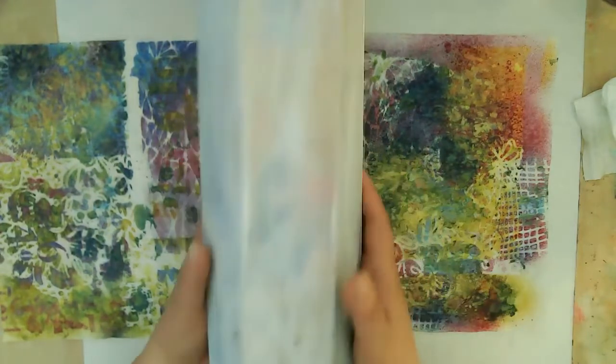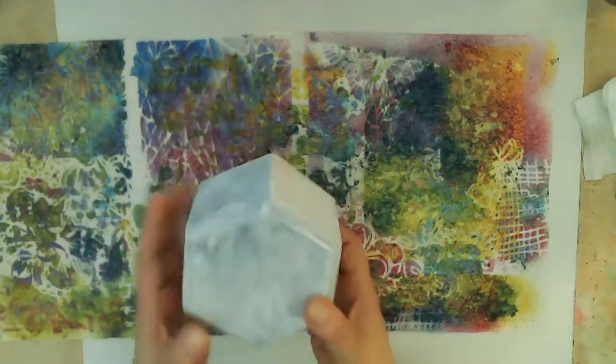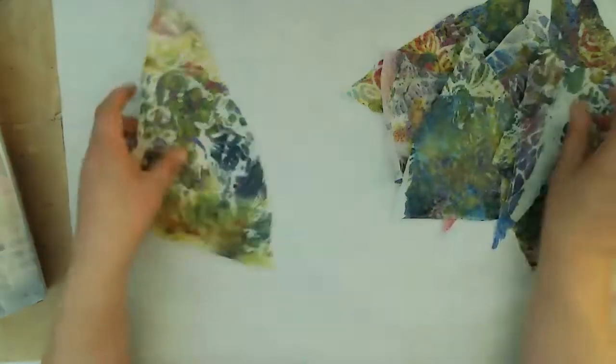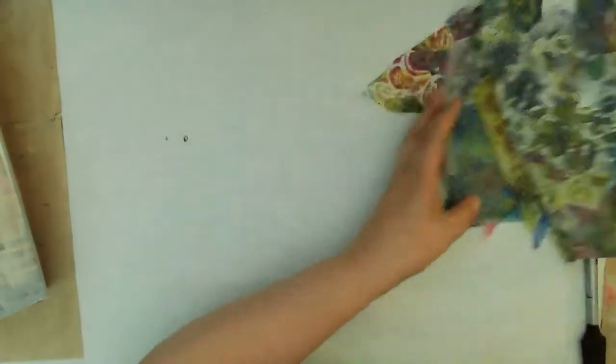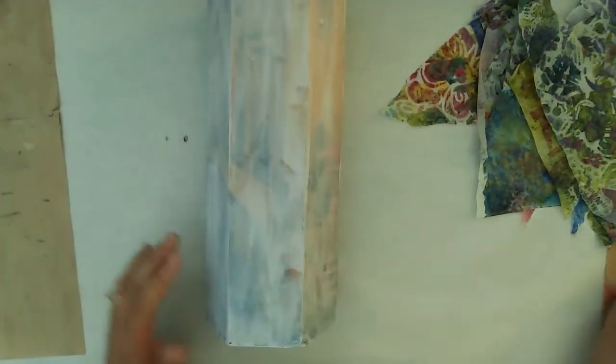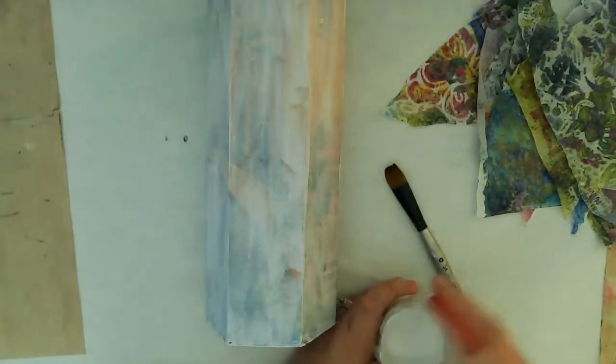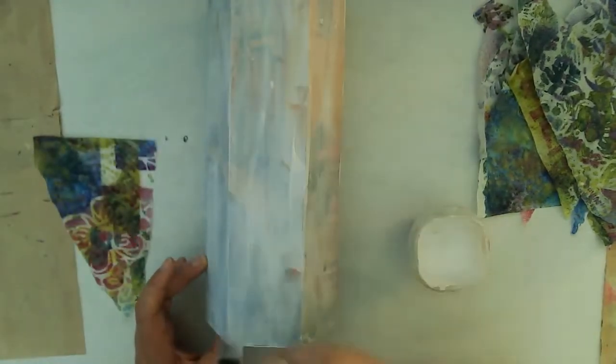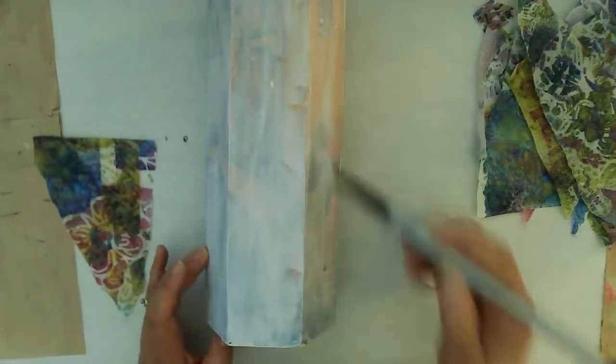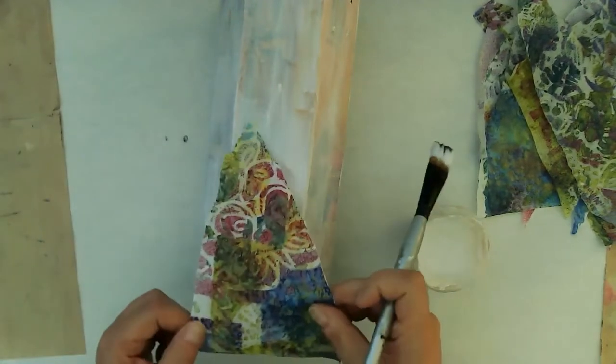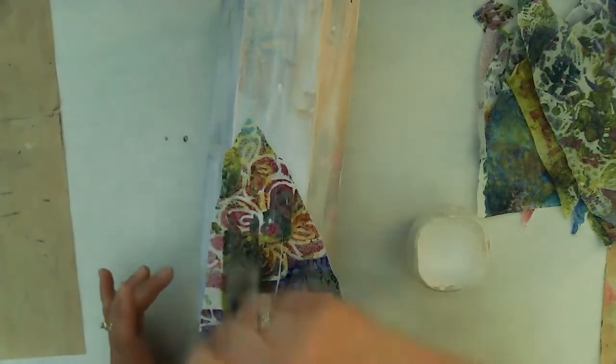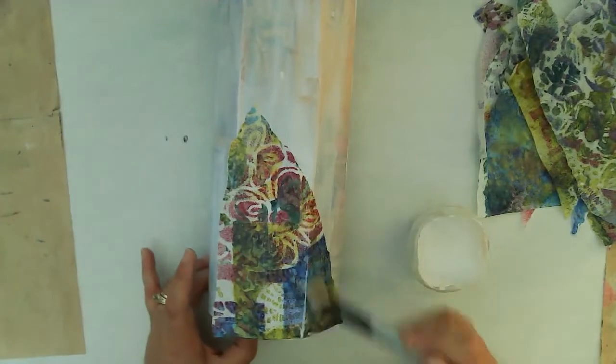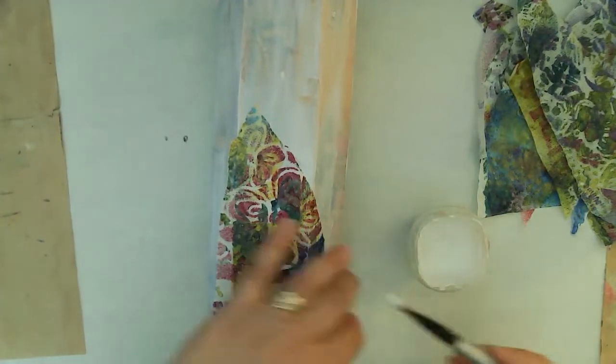So I'll be applying this with my Liquitex Matte Medium. I do cut out much of this process because it was fairly lengthy. I do tear them up and then apply them all around the sides of the box and the lid. It was really interesting because I didn't really plan on how much paper it was going to take to cover the box, and I literally used every single piece of this paper.